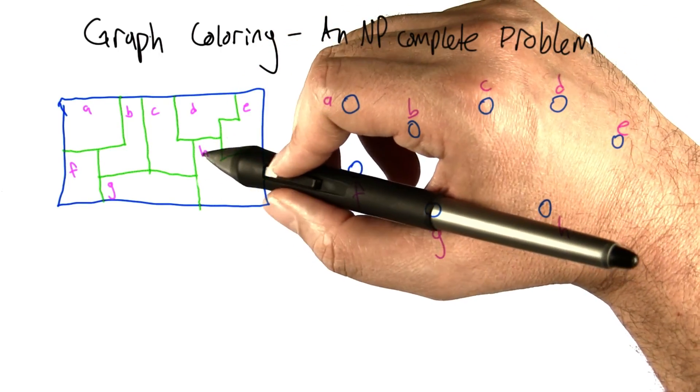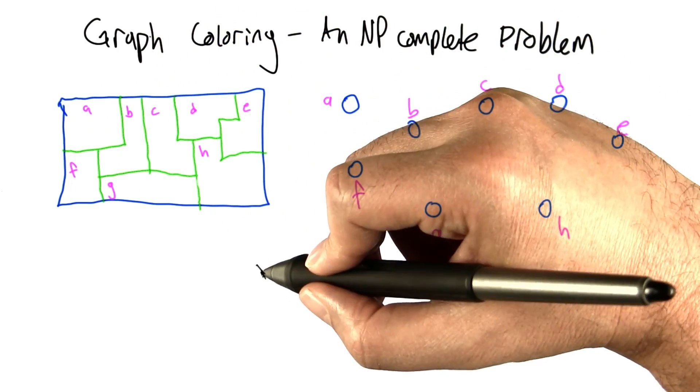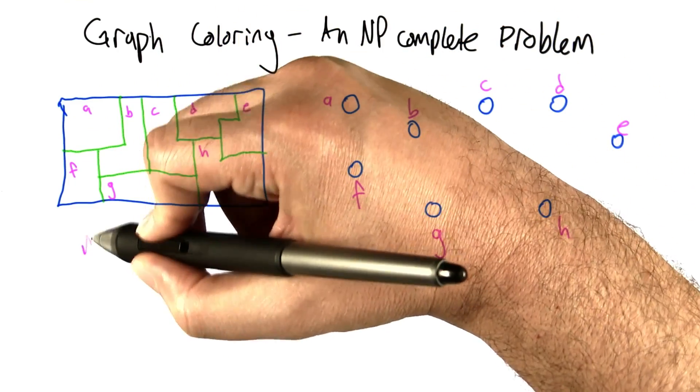Now, in the beginning of this unit, I did a little magic trick having to do with coloring in regions in a map. This problem is sometimes called map coloring.